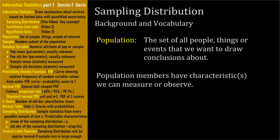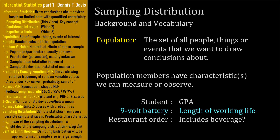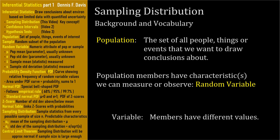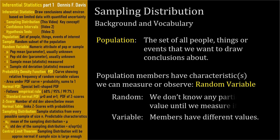Individual members of the population have characteristics we're interested in that we can measure or observe. In our battery example, it was the working battery life. We call this characteristic a random variable. It's variable because different members of the population will have different values — different 9-volt batteries will have different lifetimes. And random means we don't know beforehand what the lifetime of any particular battery will be, not until we choose a battery at random and measure its lifetime.